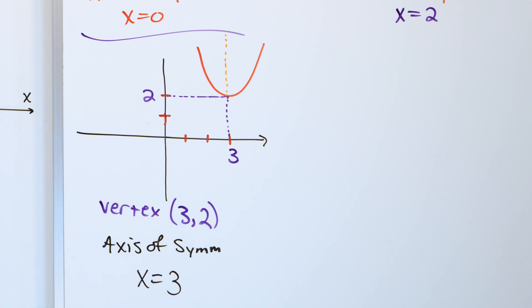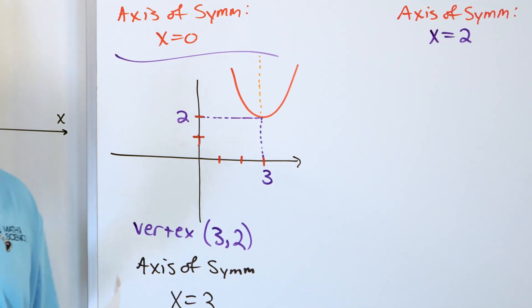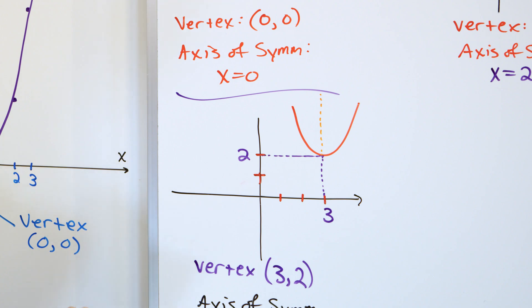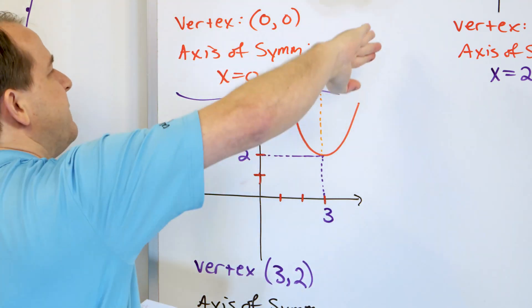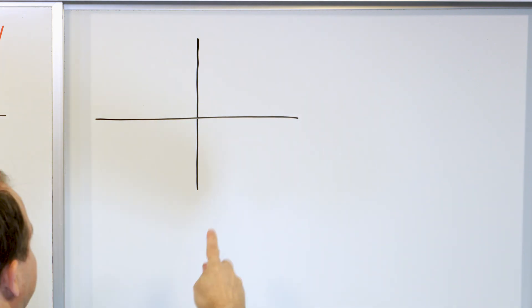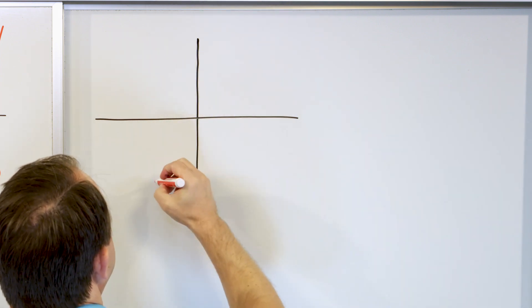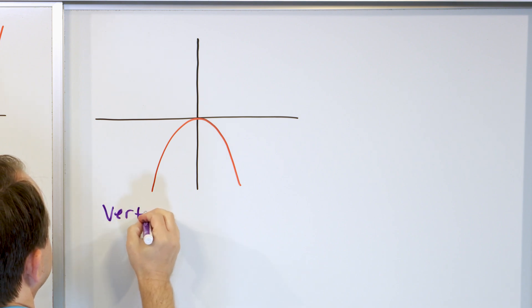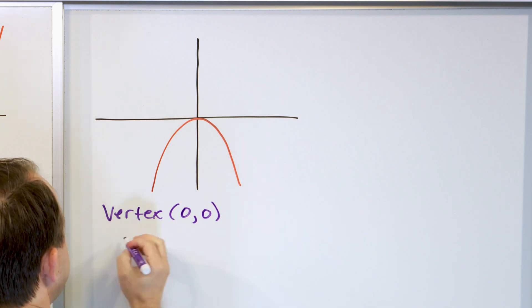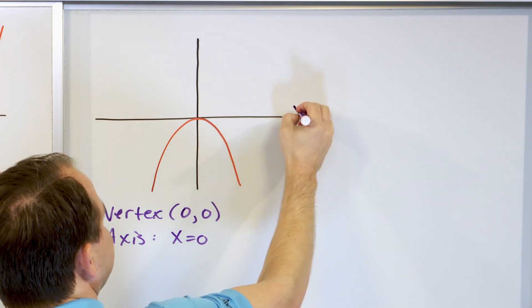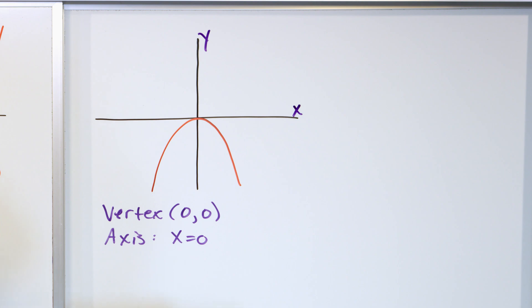So far most of these parabolas have opened up. But what does the vertex and axis of symmetry look like for a parabola that opens upside down — a frowny face instead of a smiley face? If the parabola opens downward and is centered at the origin, the vertex is located at the highest point, which is right at the origin (0, 0). And the axis of symmetry is still x is equal to 0, the line that bisects it right down the middle.